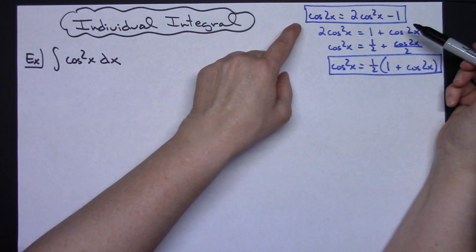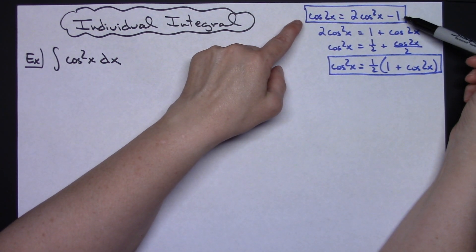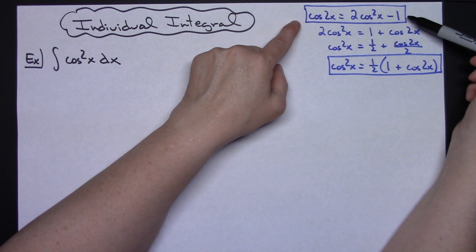Now to get started here, let's take a look at these identities. I've got a double angle formula right here that's a pretty common formula that you probably have memorized.